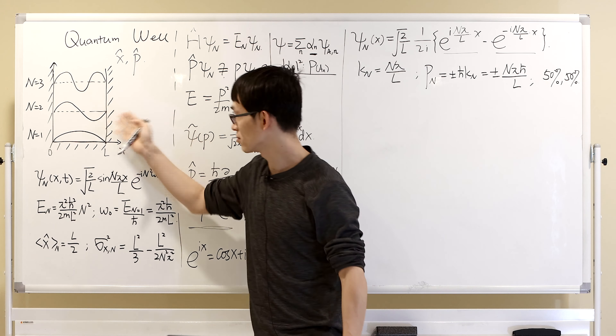Momentum expected value is zero. The next thing we want to show is the uncertainty of momentum. Because we have uncertainty of position, we can also show there's uncertainty of momentum. By definition, the uncertainty (standard deviation) of momentum for the nth eigenstate is the square root of ⟨P²⟩ - ⟨P⟩², which simplifies to ⟨P²⟩ since ⟨P⟩ = 0.